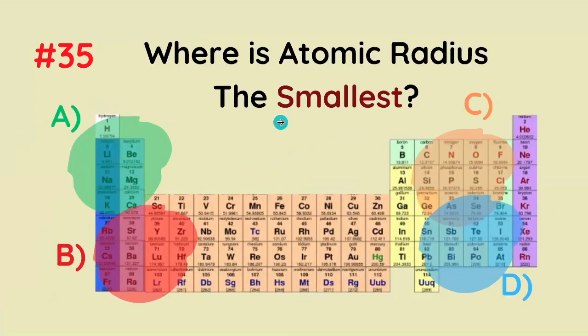Which corner of the periodic table has the smallest atomic radius? It's going to be the top right corner, because that's just how the periodicity works.